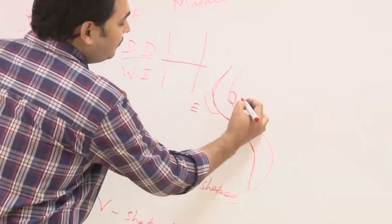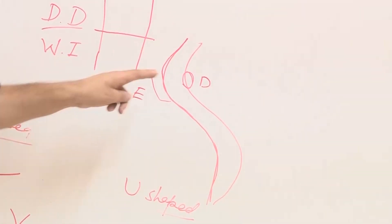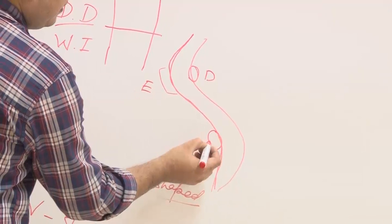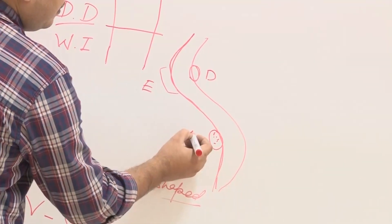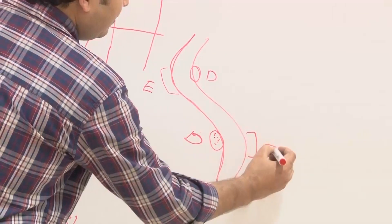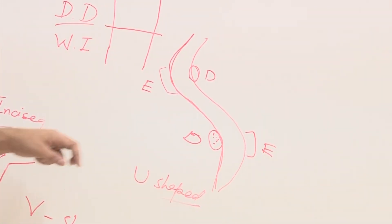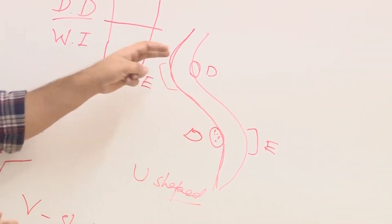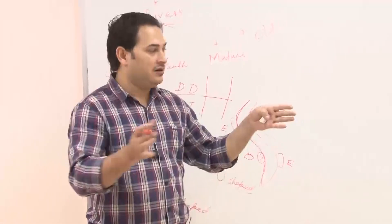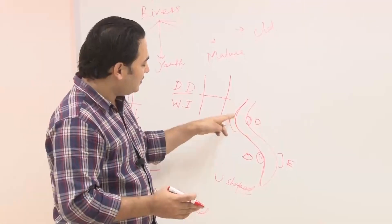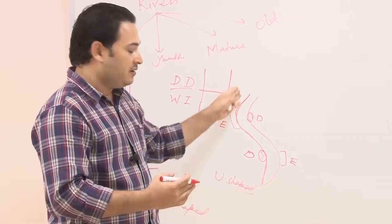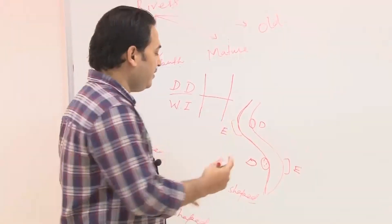Erosion occurs at the outer bends while deposition occurs at the inner bends. That is why in the later stages, the channel becomes wider, because at the outer bends the river continuously erodes its outer levy.